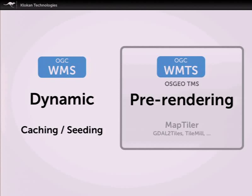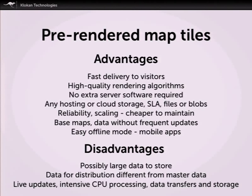With the pre-rendering approach, there has traditionally been the gdal2tiles utility, which was my student project for Google. You can also pre-render vector data with Mapnik. We will show MapTiler, which is kind of an advanced version of gdal2tiles with several advantages.